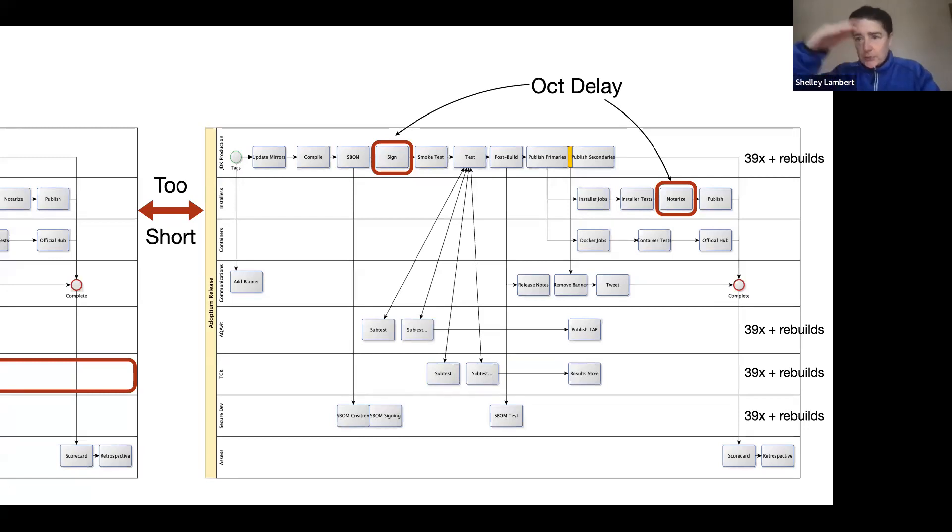Because as you proceed on with this, you're wasting valuable time and resources and we end up having to do rebuilds. So instead of having to repeat this JDK production line 39 times, you have to add in all those rebuilds and some of these swim lanes have to be repeated again and again. So that's why I call them expensive when we have to do them.